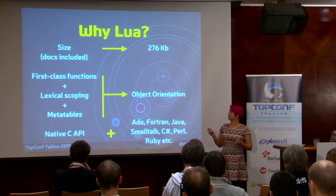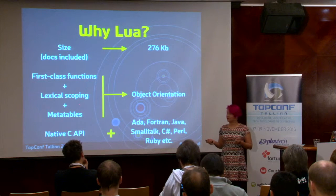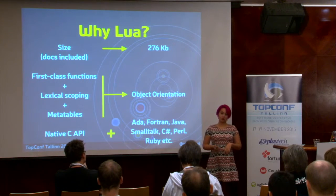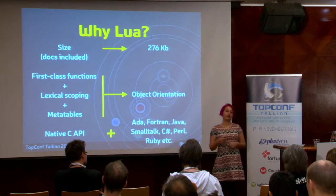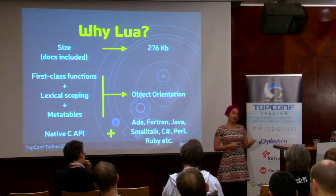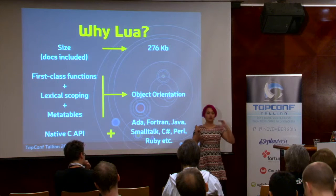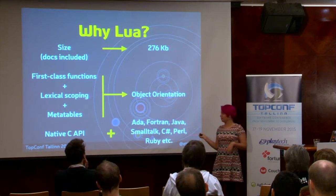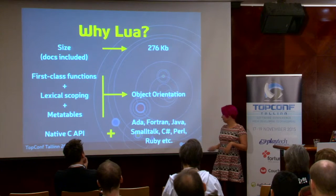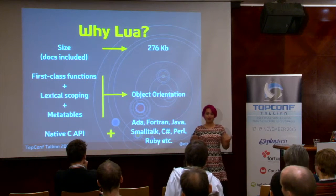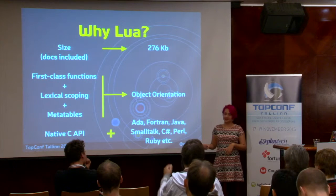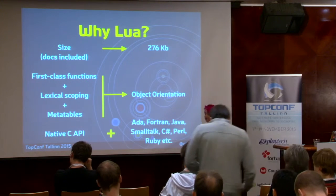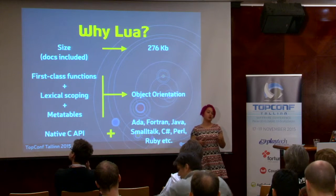Lua doesn't implement everything in the language itself, but offers everything you need. For example, with first-class functions, lexical scoping, and metatables — more on that later — you can do object orientation. Lua also has a native C API, which is a two-way street: you can embed the whole Lua language into a C program and use Lua as a library, or from Lua you can call code written in C. This leads to one thing Lua is best at: being used as a glue language.